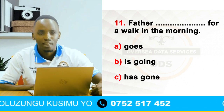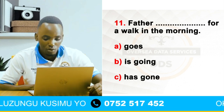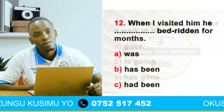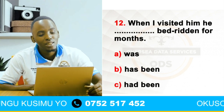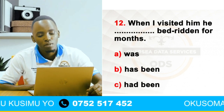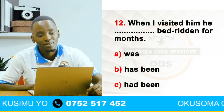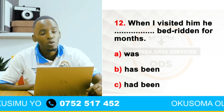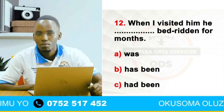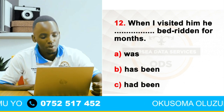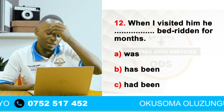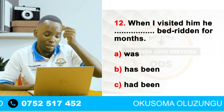Twelve: when I visited him, he dashed bed-ridden for a month. Alternatives: was, has been, had been. Pick from the three and then get us the correct answer.